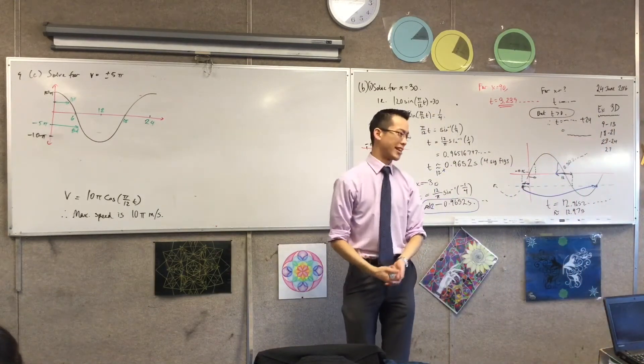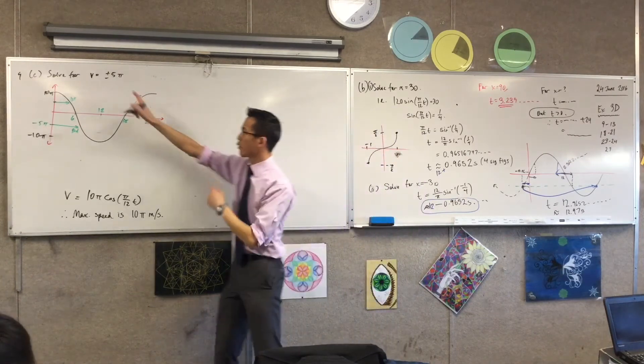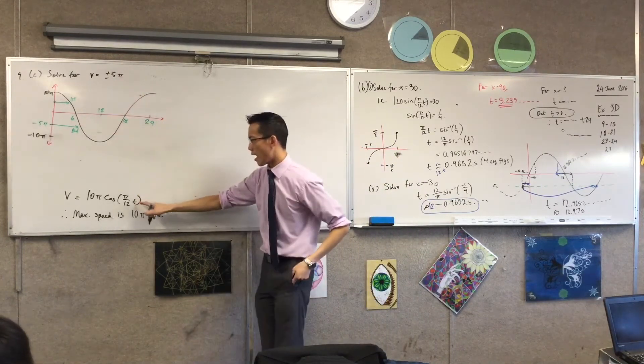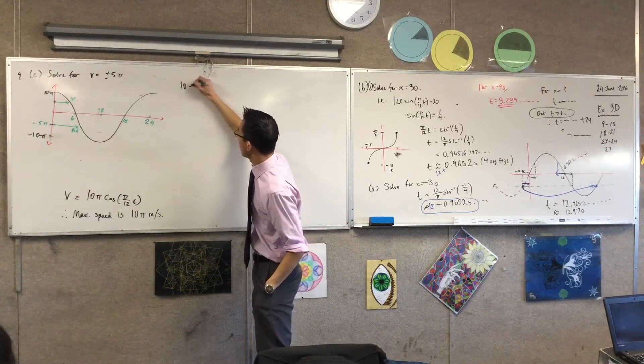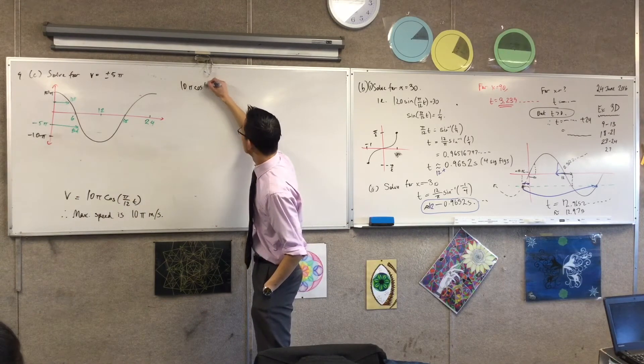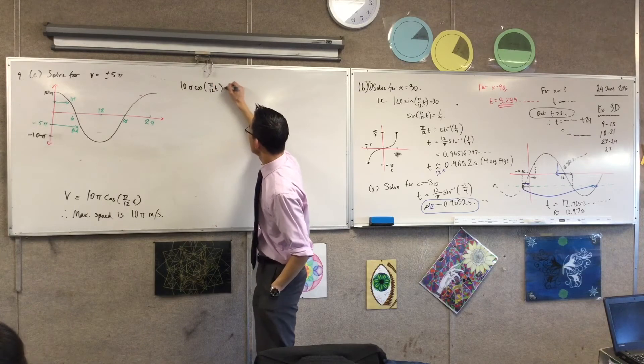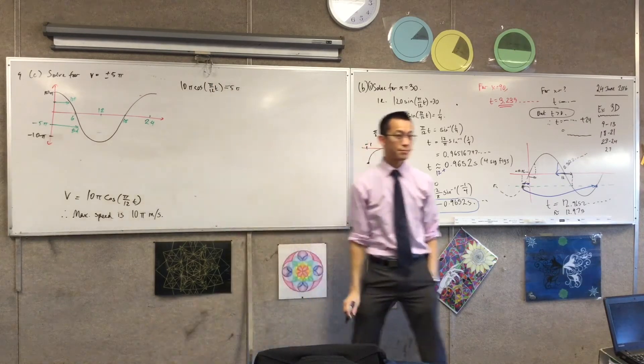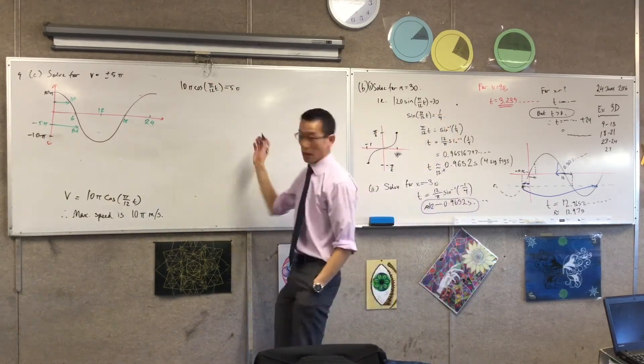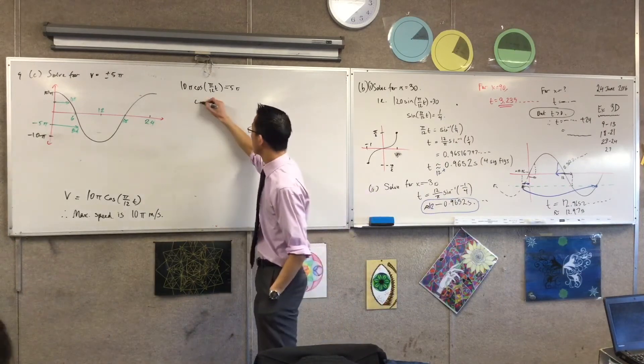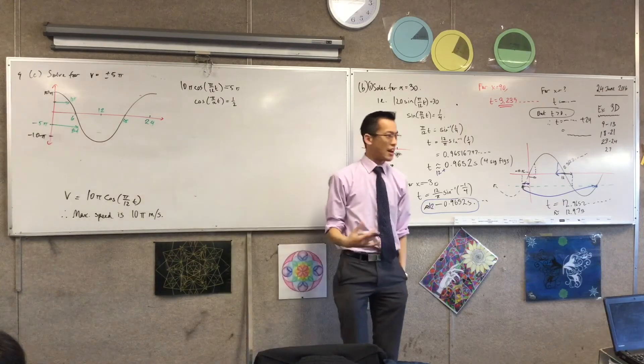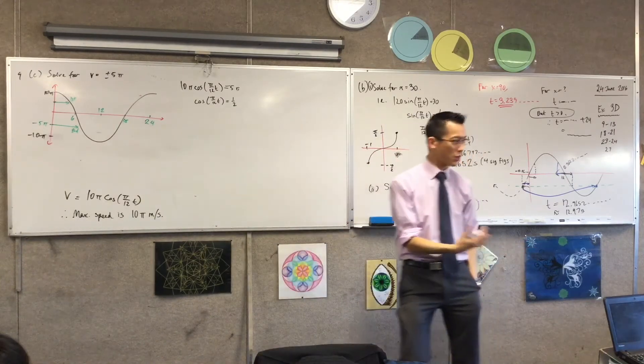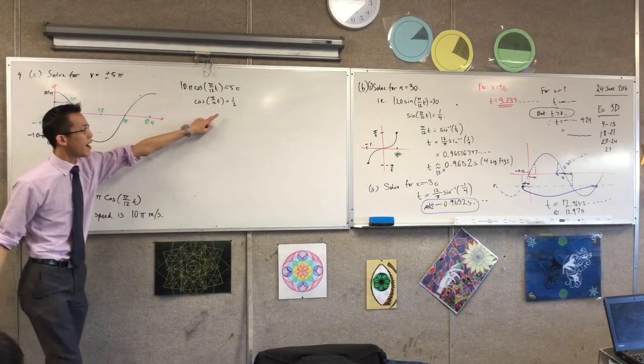So now I'm going to set up an equation. If I'm solving for v equals 5π, I'm just going to make a substitution over there. So I'm going to say 10π cos(π/12 t) equals 5π. I'm just going to divide through by 10π, which of course gives me this. Now, in fact, you could have seen that before. You could have noticed that, because of course you're going to be half.